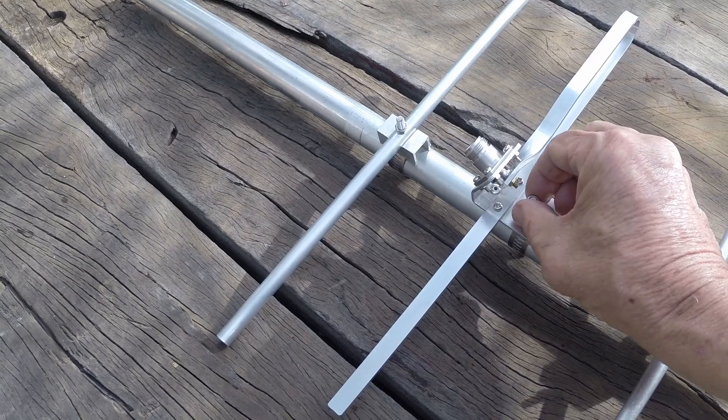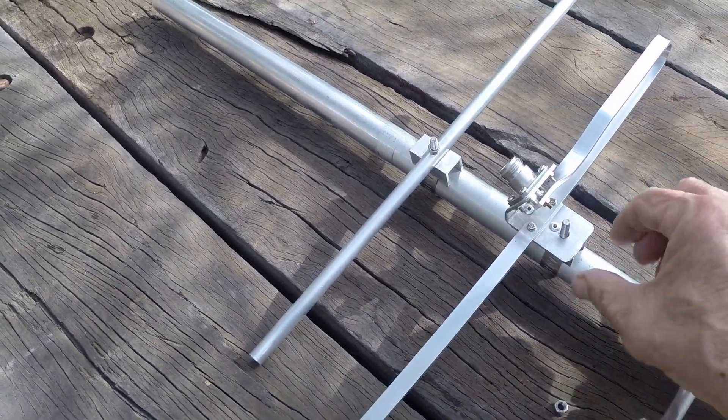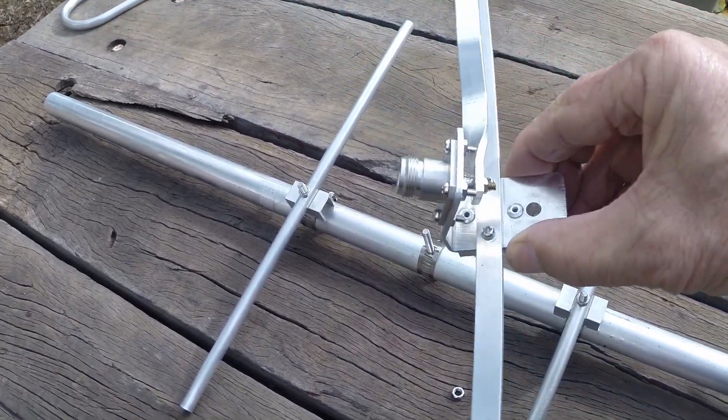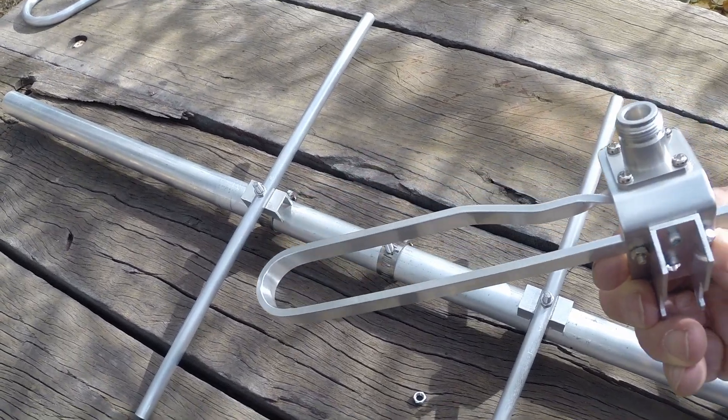We're freely able to adjust the reflector and director. So the J driven element can be positioned so that the coax feeds towards the center of the antenna or it can be fed off the end.